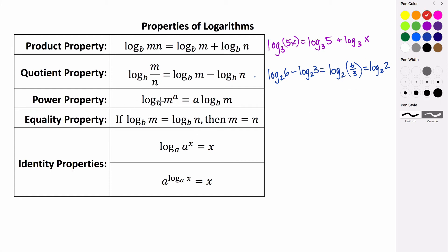The power property says if you have a log of base b and your argument is being raised to some power — m to the a power — you can take the power and move it to the front and express it as a factor, so a times the log base b of m. For example, log base 3 of x to the 5th — we can take this exponent and move it to the front. This would be the same as 5 times log base 3 of x. And that's the power property.